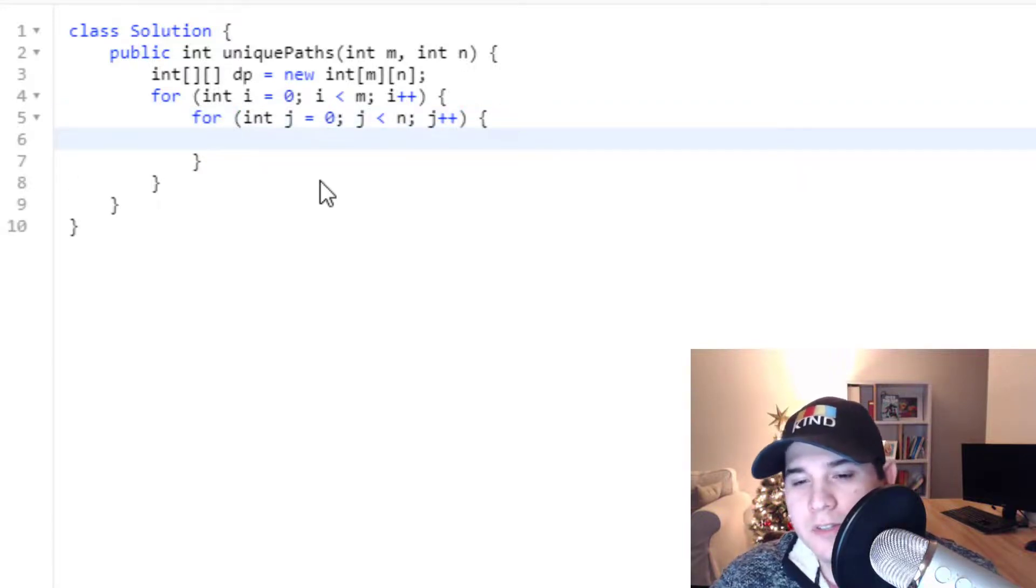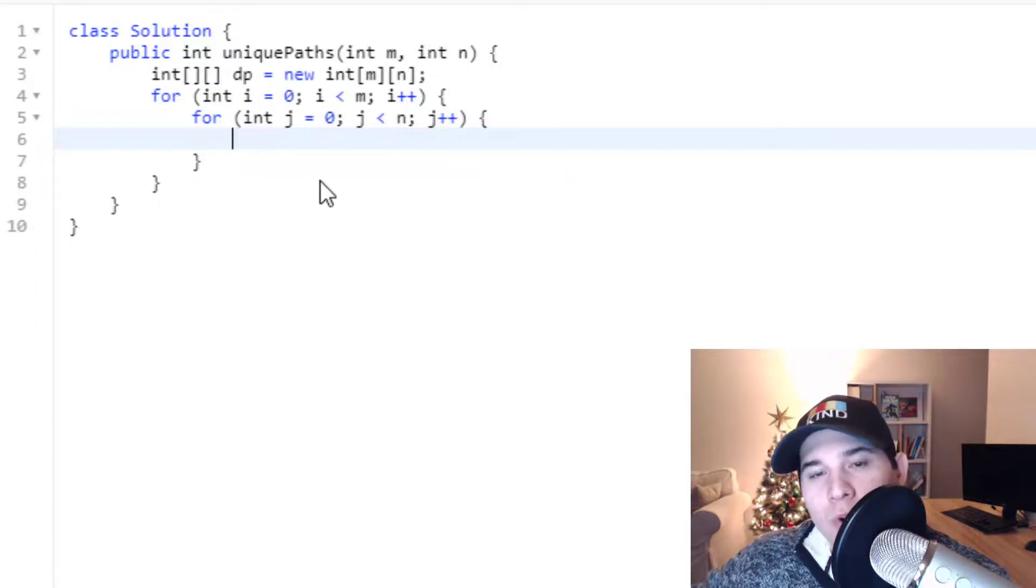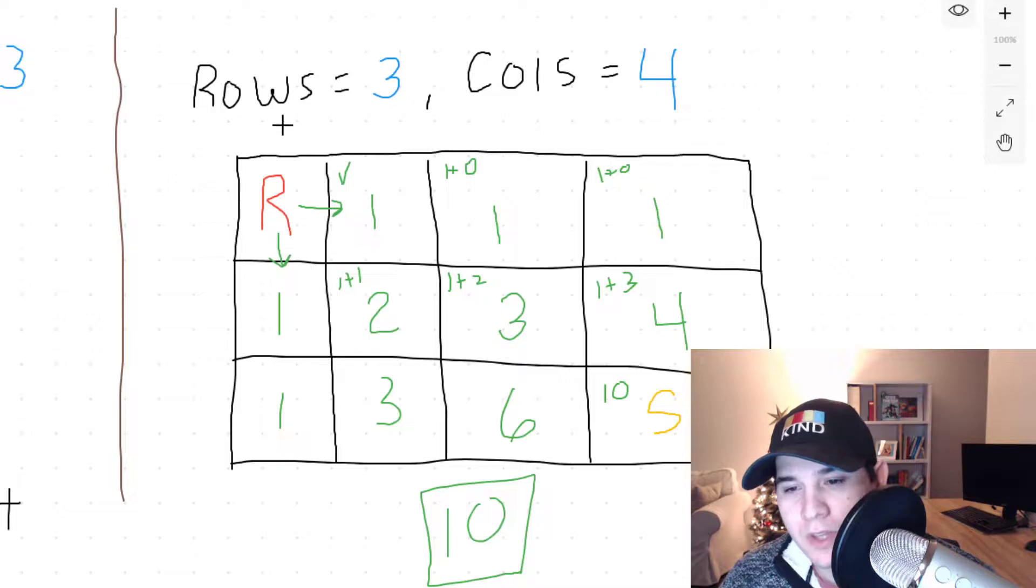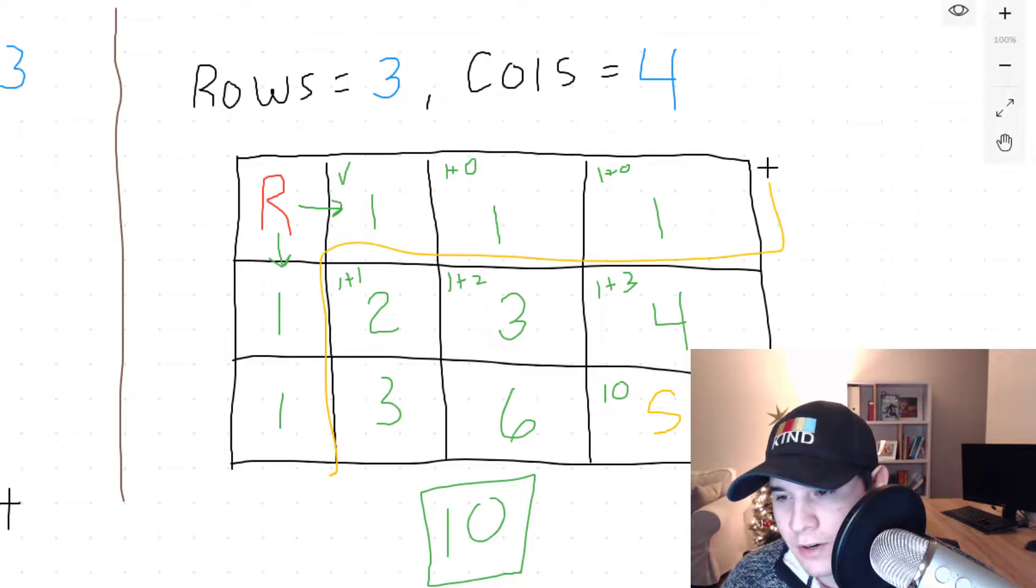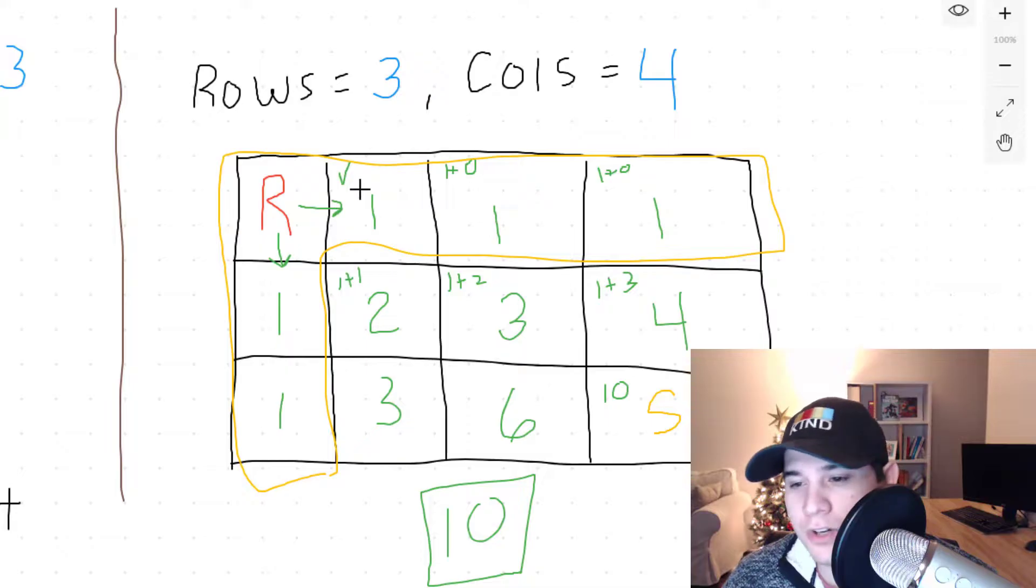And now this is where we need to check whether we are at a border or not because if you remember let's go back to the whiteboard. If we are anywhere on the perimeter right here so the top or the left we can see that all these values are just ones right because there's only one unique path to get to each of these boxes since the robot can only move right or down.